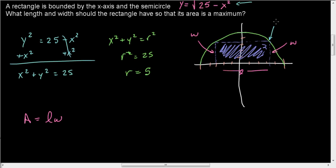we can use symmetry to call this point negative x, y. This may help us out because the width is y, and the length equals twice x.